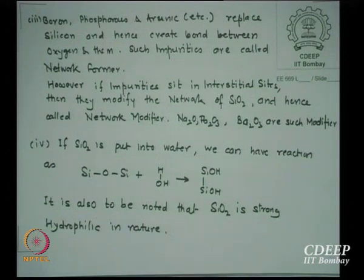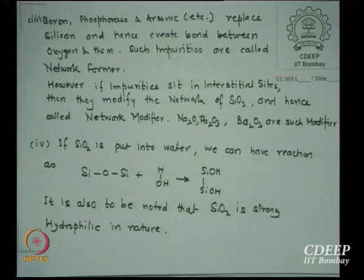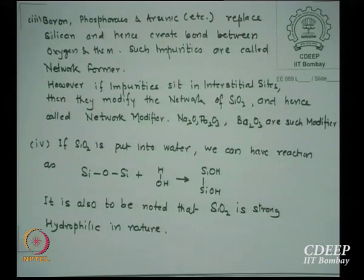Boron, phosphorus, arsenic, and similar impurities in silicon enhance and create bonds between oxygen and themselves. Such impurities are called network formers because oxygen will also get bonded to them. However, if impurities sit at interstitial sites they modify the network structure. Network modifiers include Na2O, barium oxide, lead oxide PbO, and tin oxide. Please remember these impurities are only present in trace amounts — one part per billion or lower.